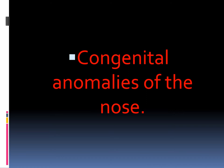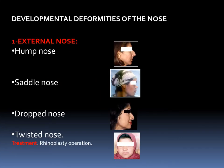Let's start with congenital anomalies of the nose. There are different developmental deformities of the external nose: hump nose (also called Roman nose), saddle nose which is the opposite — a depressed nose — dropped nose, and twisted nose, where the nose deviates to the right or left from the midline. All of these are treated by a rhinoplasty operation, commonly called a nose job.